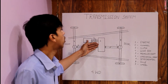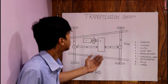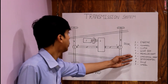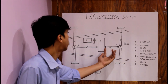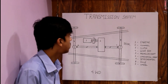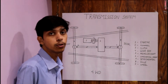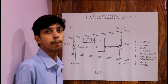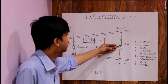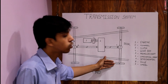After the gearbox, to transmit the power to the wheels, we use the propeller shaft. This propeller shaft is coupled with the help of universal joints, through which the geared power is transmitted into the differential. The differential is used to transmit the power of the propeller shaft through 90 degrees to the axles. After the differential, power is transmitted to the axles and then into the wheels.